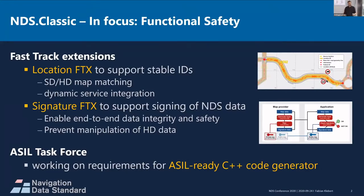The main use cases for the location FastTrack extension are to map SD and HD maps from different vendors, as well as integrating dynamic services. We also added the signature FastTrack extension, which enables end-to-end data integrity protection by signing each and every data block that goes over the wire, preventing manipulation of HD data.